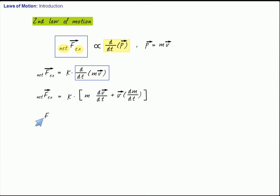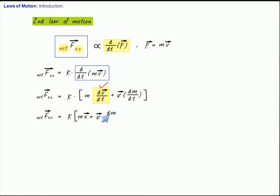So, the net external force equals k times (m dv/dt + v dm/dt). Here, dv/dt is the rate of change of velocity, which we call acceleration. And dm/dt is the rate of change of mass of your system.